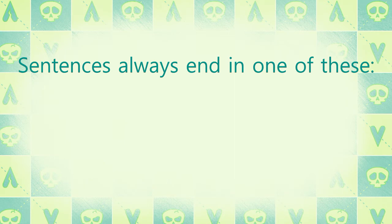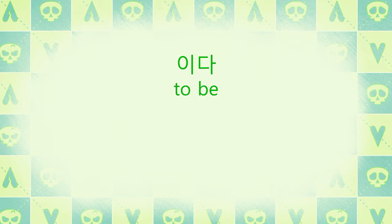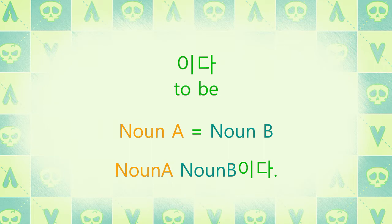In Korean, a sentence will always end in either a verb, an adjective, or 이다, or its opposite, 아니다. 이다 is unique because it's conjugated differently from verbs and adjectives, and it's also attached to the end of nouns. 이다 means 'to be.' For instance, 'I am a student' — the 'am' part would be 이다. Or 'this is a tree' — the 'is' part would be 이다. So 이다 is used to say Noun A is Noun B, and it's attached to Noun B.